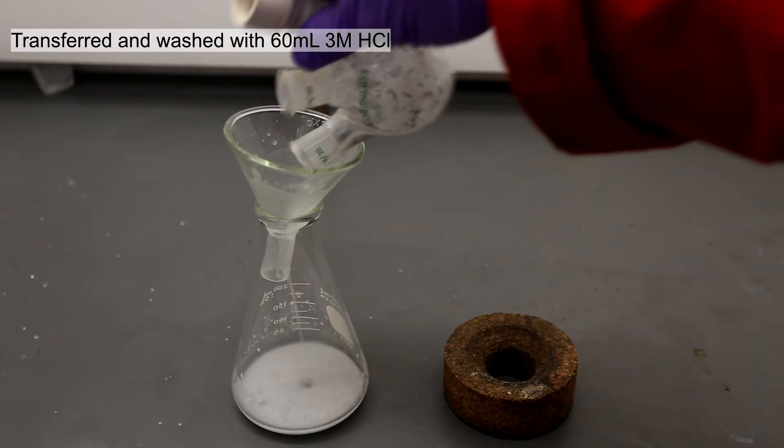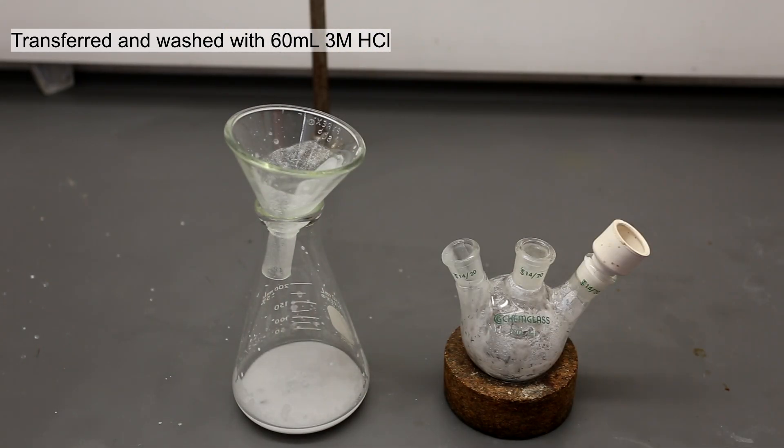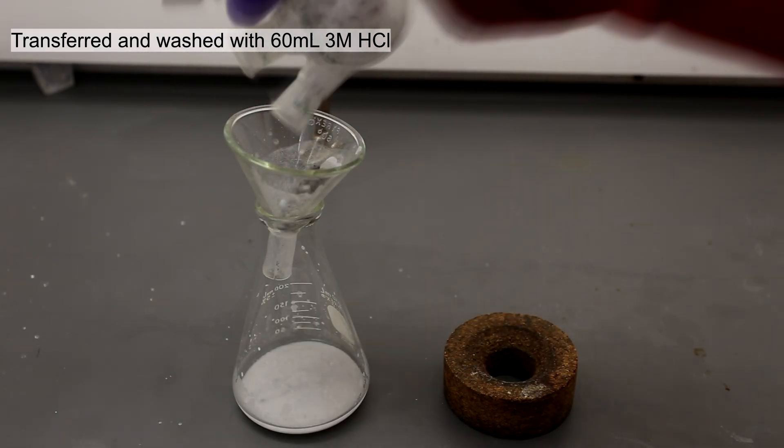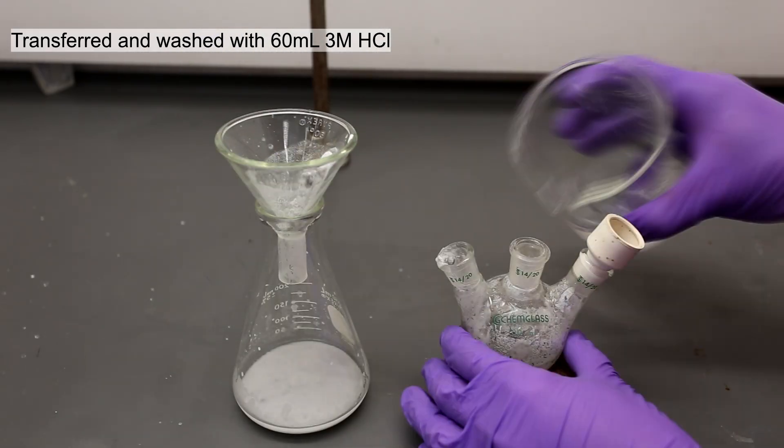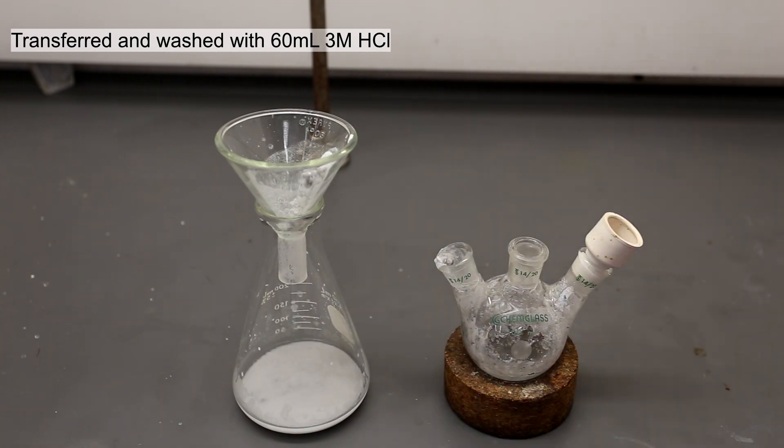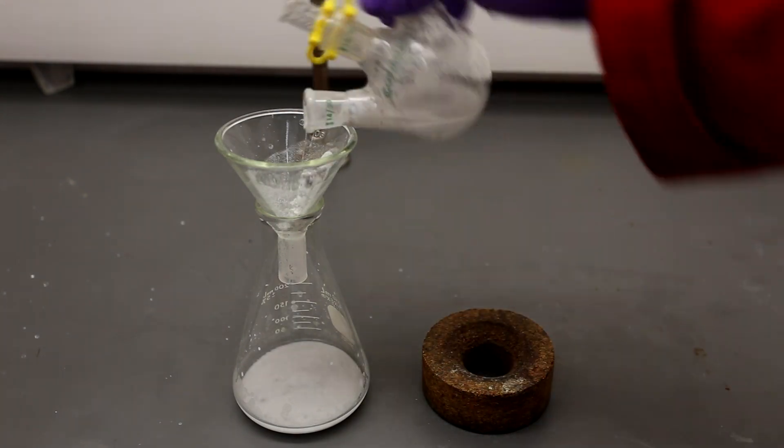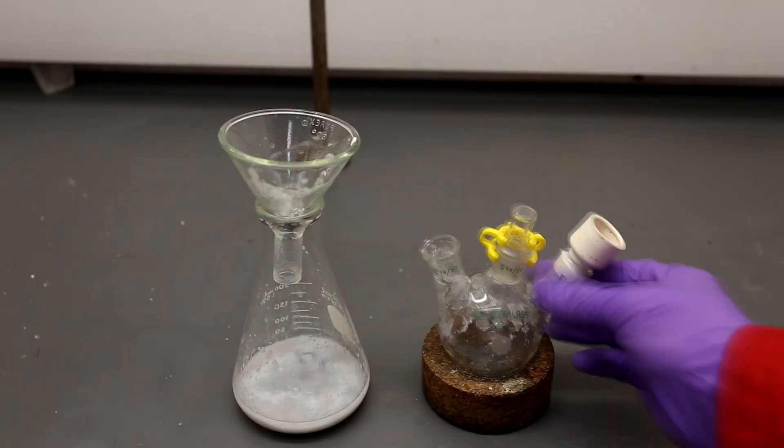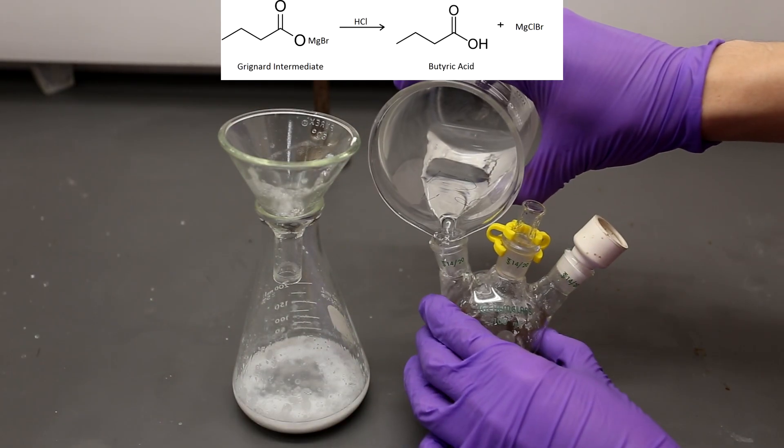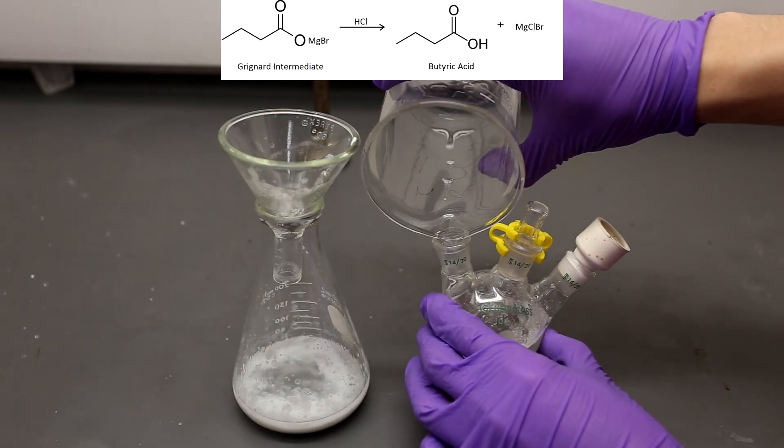The product was transferred to an Erlenmeyer flask and washed several times with a total of 60 milliliters of 3 molar hydrochloric acid. The addition of the hydrochloric acid induces hydrolysis which leads to the formation of our final butyric acid product. The reaction that is taking place is shown above.